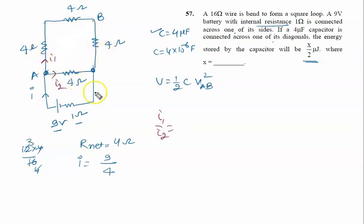4, 4, 4, 12 and 4. The ratio is given by 4 by 12 or you can say 1 by 3. So you calculate the value of the I1. I1 is given by 1 by 4 into 9 by 4. It is given by 9 by 16.